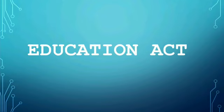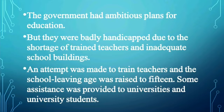The British government brought the Education Act with ambitious plans for education. They were initially handicapped due to shortage of trained teachers and inadequate school buildings. The government made attempts to train teachers, raised the school leaving age to 15 years, and provided assistance to universities and students to improve the quality of education.